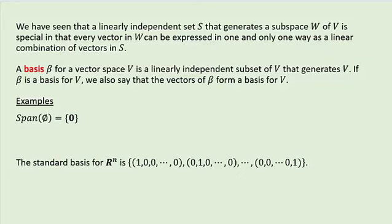This section leads us to a very important result: that all bases for a finite-dimensional vector space have exactly the same number of elements. It takes a long time to get there, and there are three theorems that will take quite a bit of time to get through. So we will divide Section 1.6 into two lectures.